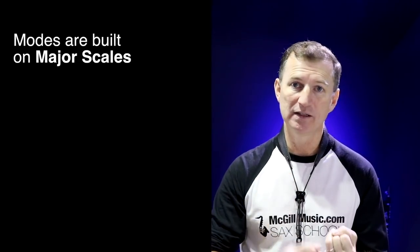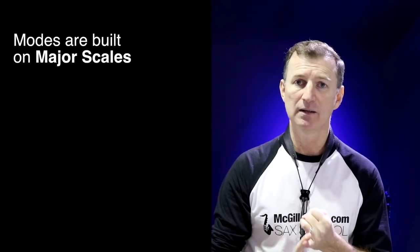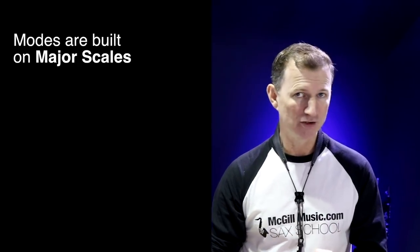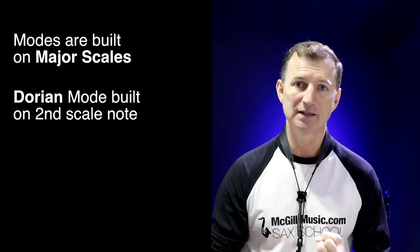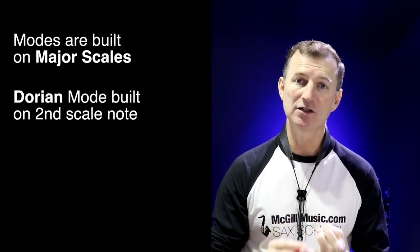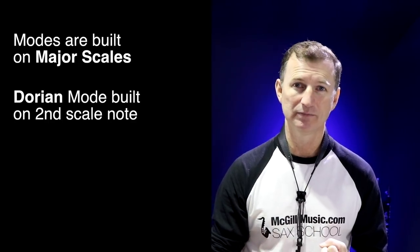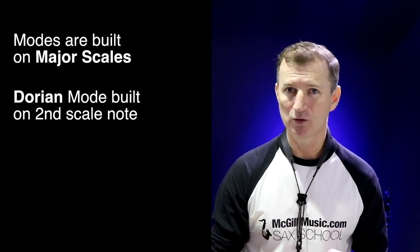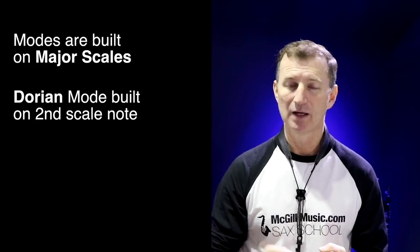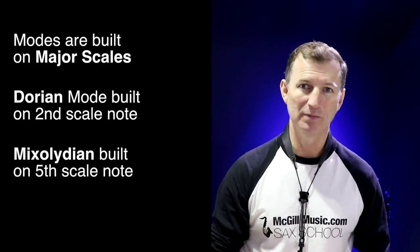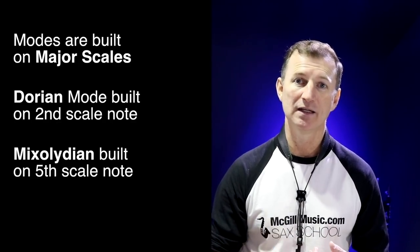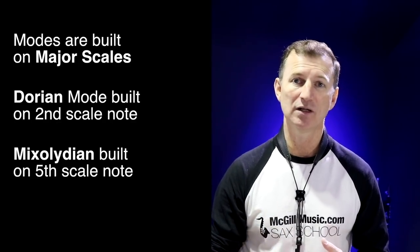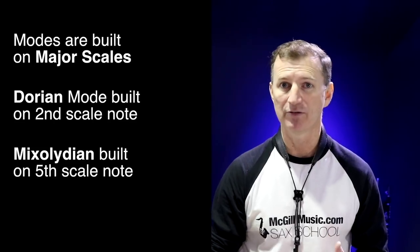So just a quick recap: modes are built on the different notes of a major scale. We find the Dorian mode by starting a major scale on the 2nd degree of the scale, and it works with a minor 7 chord. We find the Mixolydian mode by starting on the 5th degree of a major scale, and it works with a major chord with a 7th — a 7th chord.